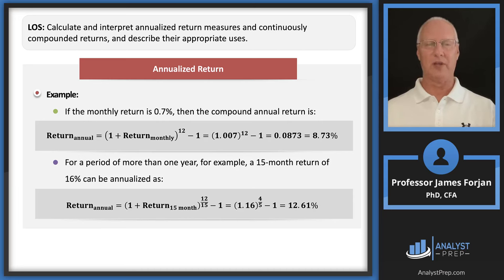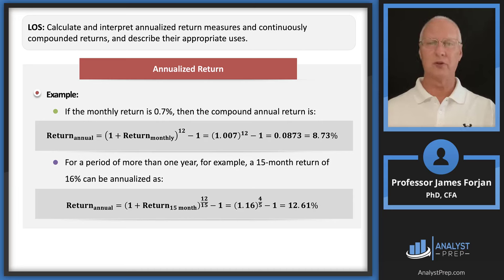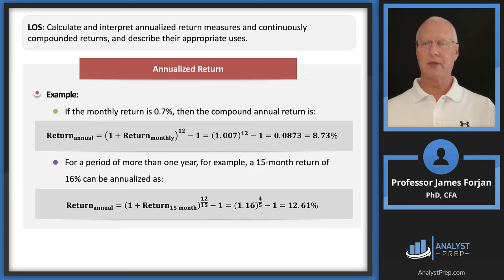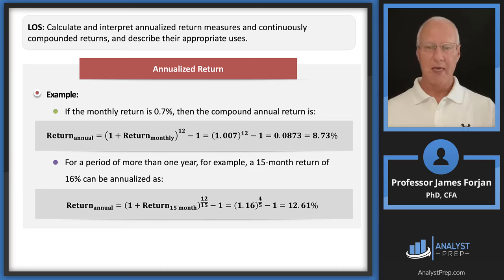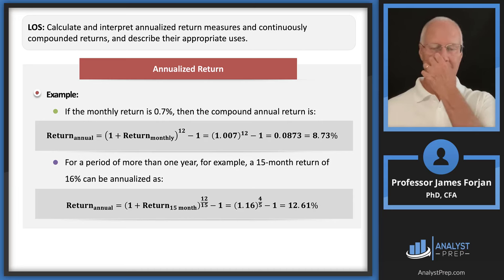For a 15-month return of 16%, we annualize by raising (1.16) to the 12/15 power — that's 4/5 — subtract 1, and get 12.61%. Here's another example: two bonds, A and B. Bond A has a 2.5% return over 120 days; bond B has a 6% return over 8 months (240 days). Annualized: Bond A = (1.025)^(365/120) − 1 = 8.18%; Bond B = (1.06)^(365/240) − 1. Bond B has the higher annualized rate of return.